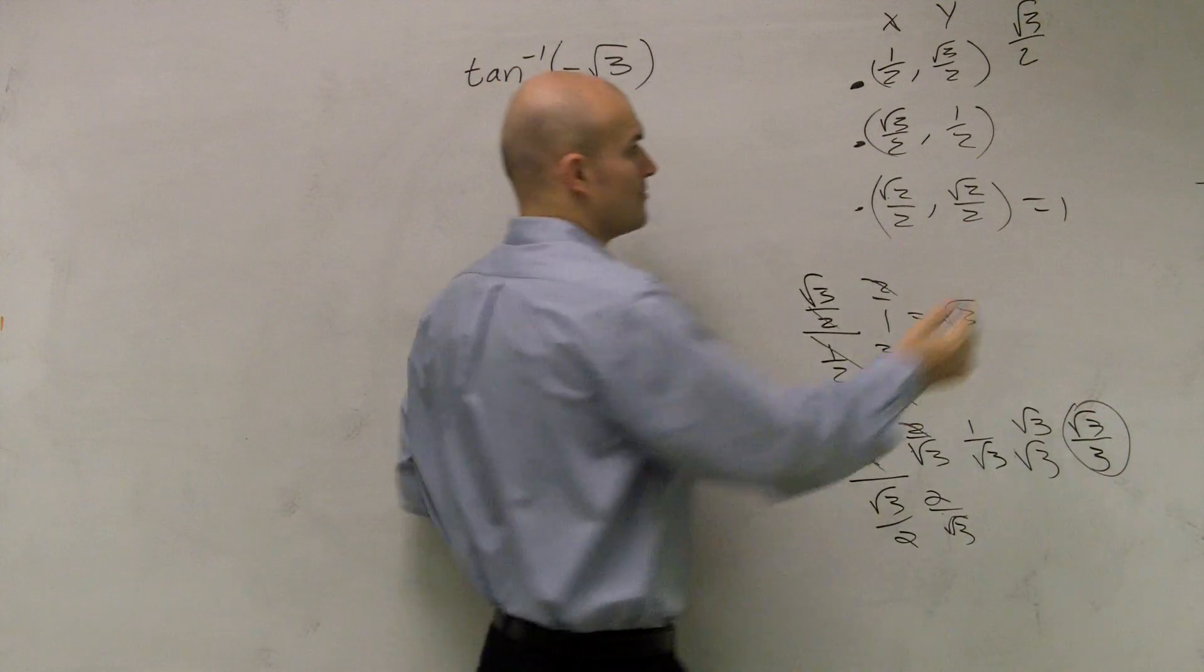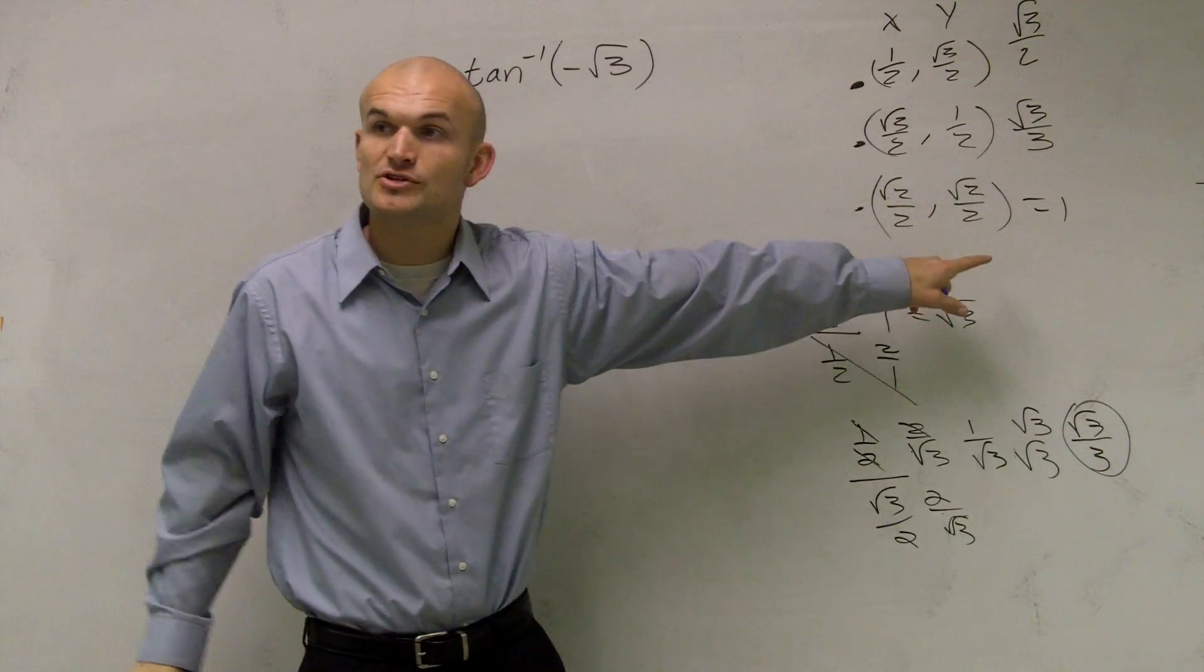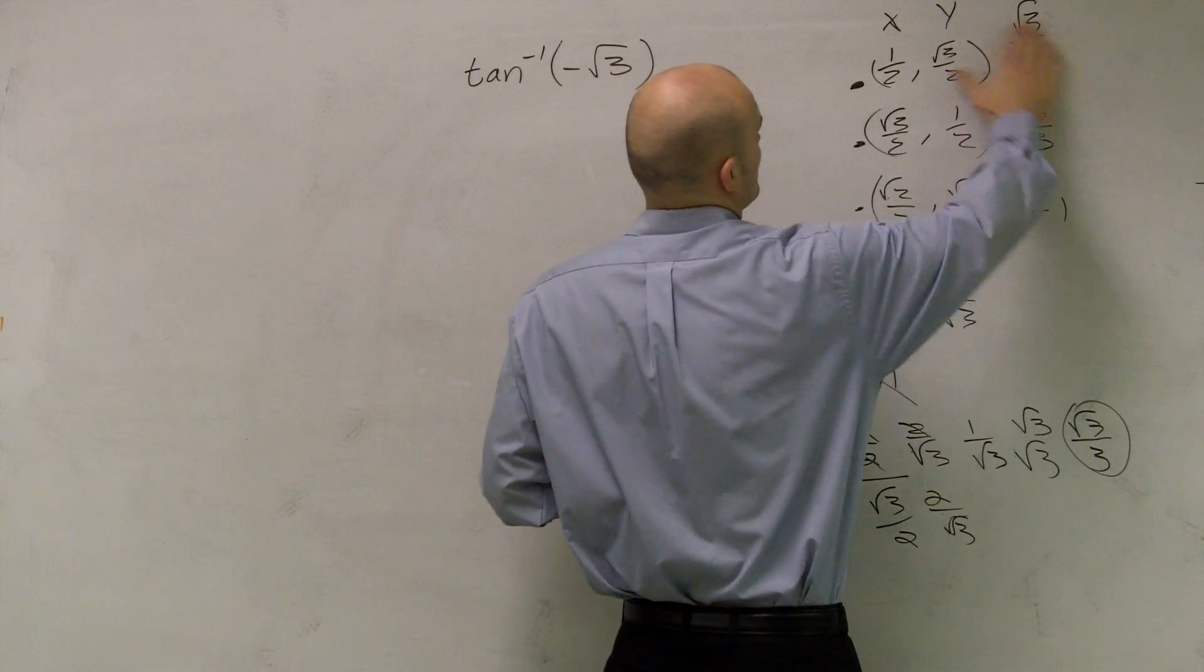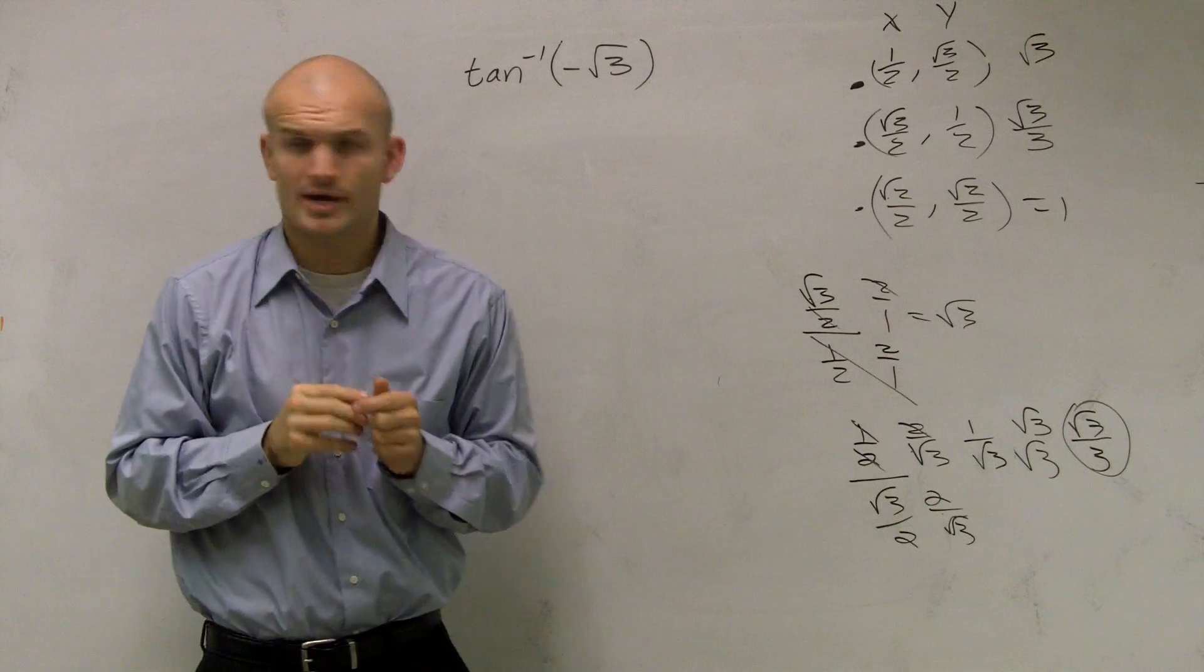So this one produces radical 3 over 3. This produces 1, and this is going to produce your just a radical 3. You kind of see what I did?